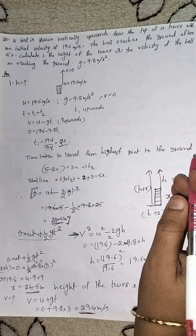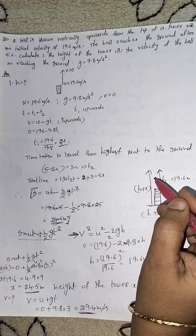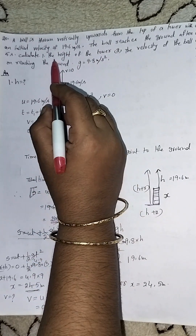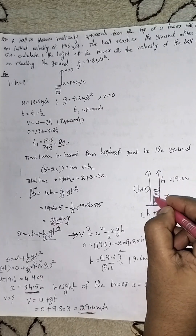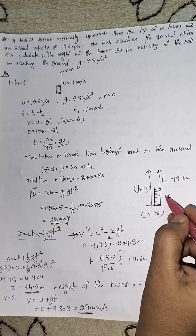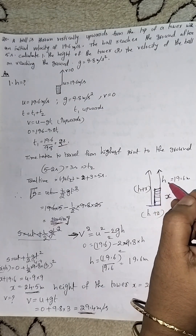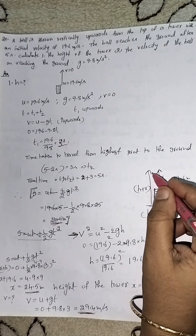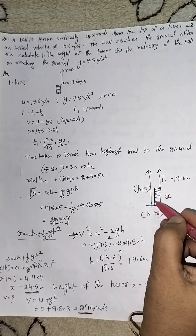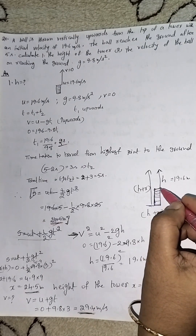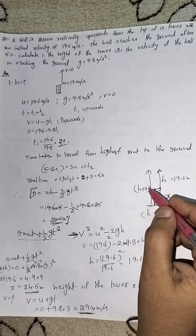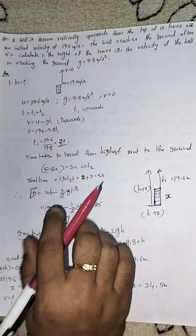The total time given is 5 seconds, so we find T1 and T2. The height of the tower is X, and we find H — the height the ball travels upward. The total distance the ball travels is H plus X. Tower height equals X, and the ball thrown vertically upward reaches height H, so total distance equals H plus X.